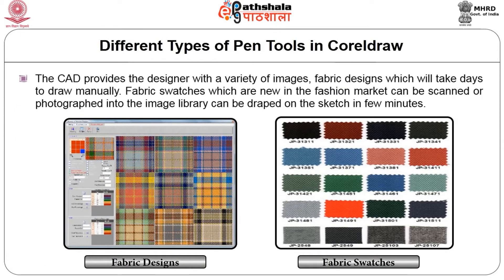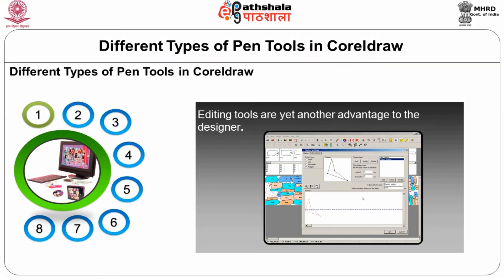The CAD provides the designer with a variety of images and fabric designs that would take days for the designer to draw manually. Fabric swatches, sometimes newly appearing in the fashion market, can be scanned or photographed and stored in the image library. This texture or design can be visualized on the garment by draping it over the sketch in just a few seconds.